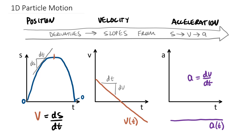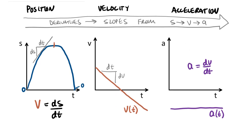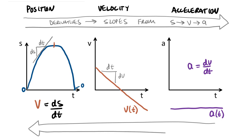It should make sense that if we use derivatives going from position to velocity to acceleration, we could also employ integrals — our other friends from Calc 1. Integrals are fundamentally areas under a curve, and we can integrate going from right to left. That covers position as a function of time, velocity as a function of time, and acceleration as a function of time.